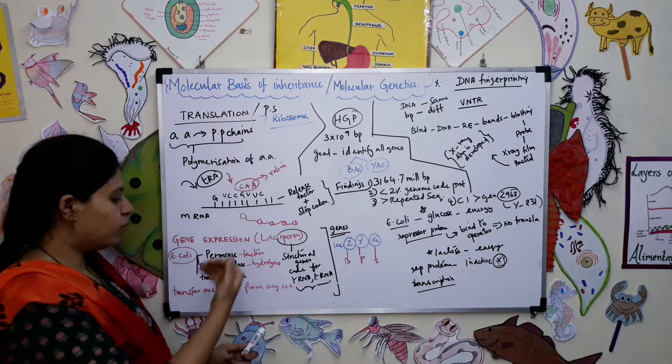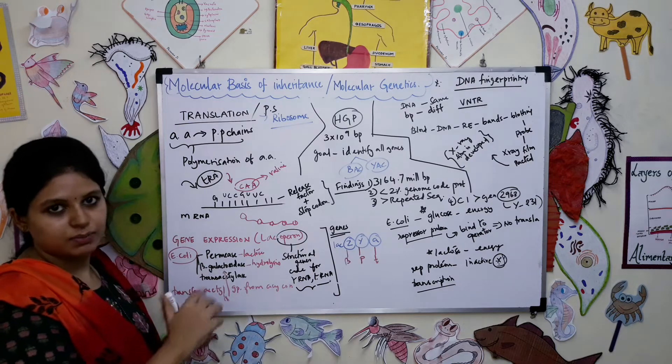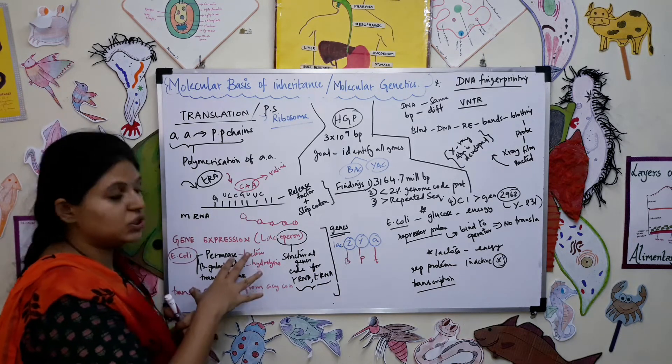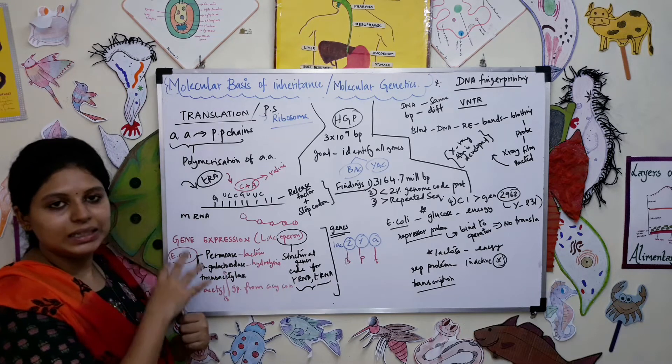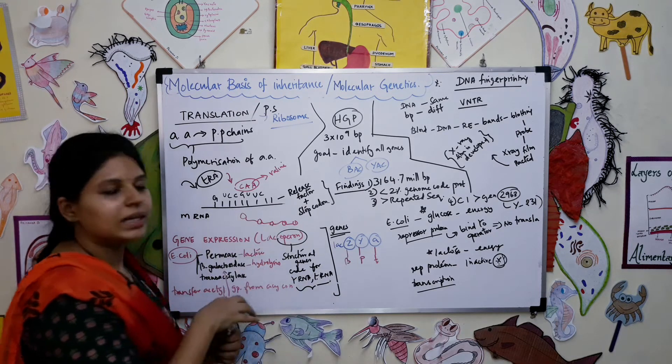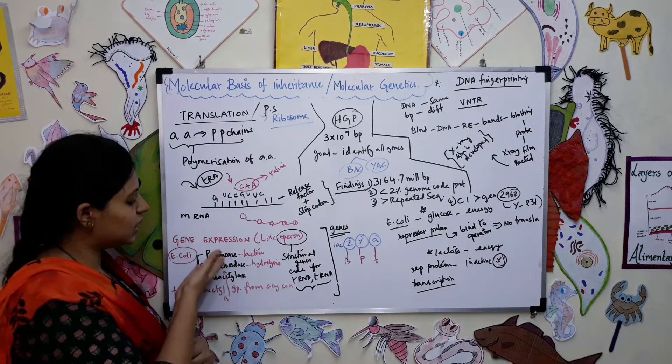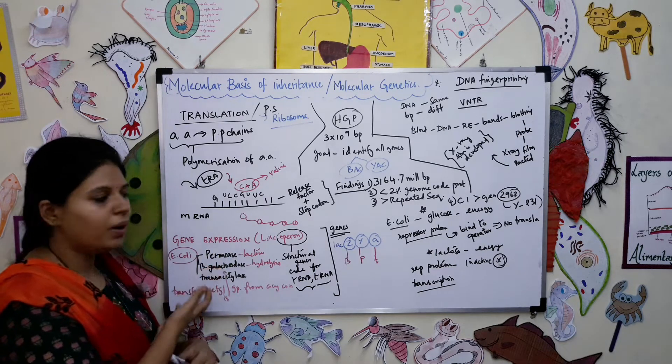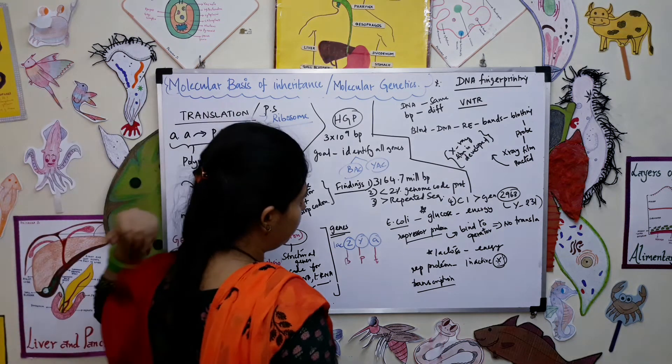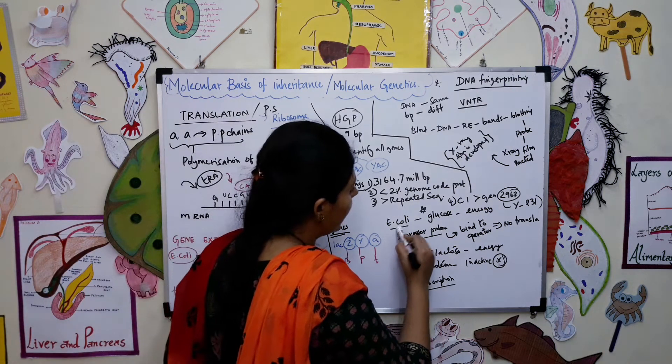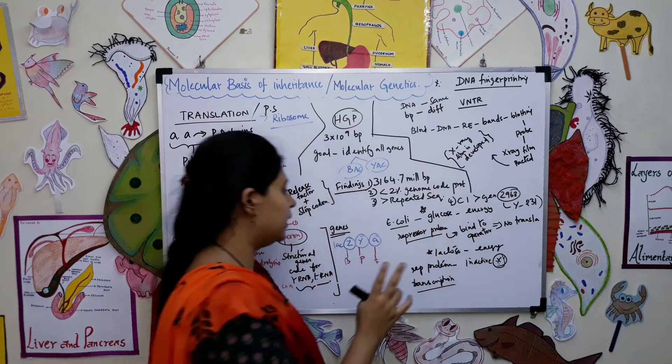These are all the three different genes and what they code for - these enzymes. So we spoke about what is gene expression, what is this operon model, and in E. coli with all these three types of genes, each of these genes coding for the enzyme.